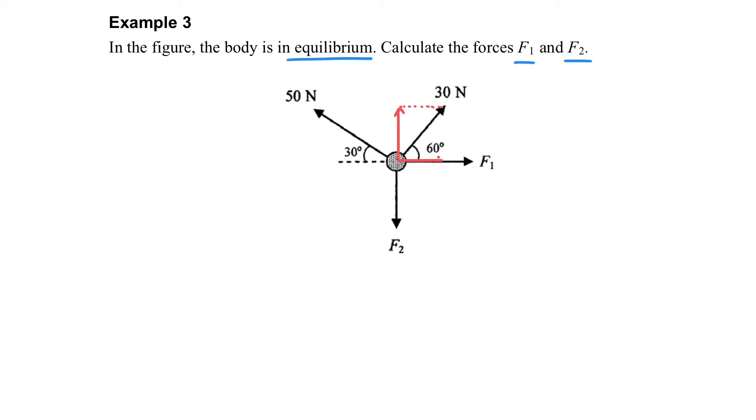We have to resolve the forces into vertical and horizontal direction first. So the red one represents the component of the 30 Newton force, and the green one represents the 50 Newton force.